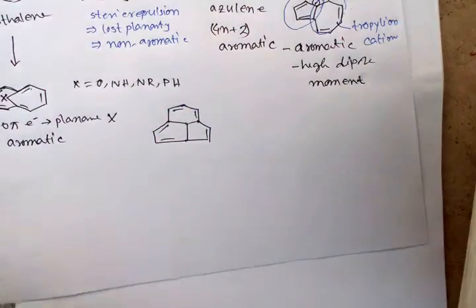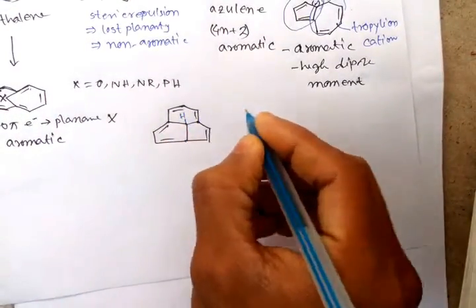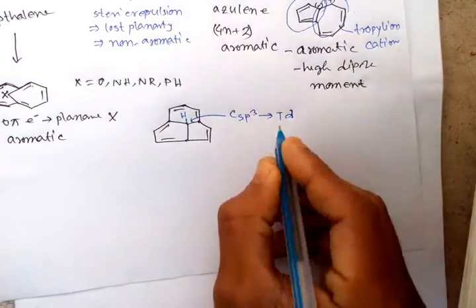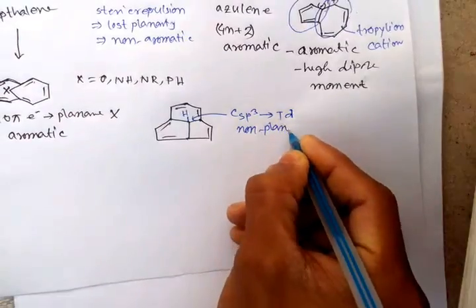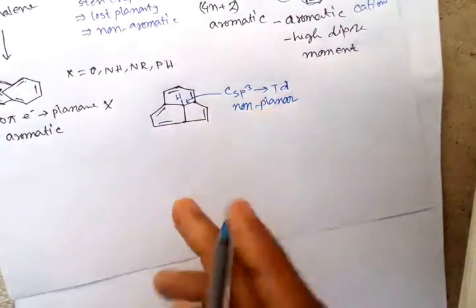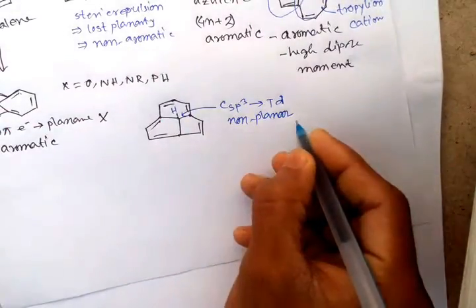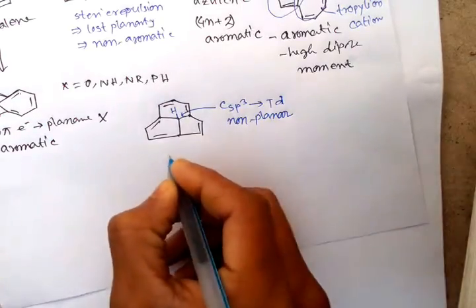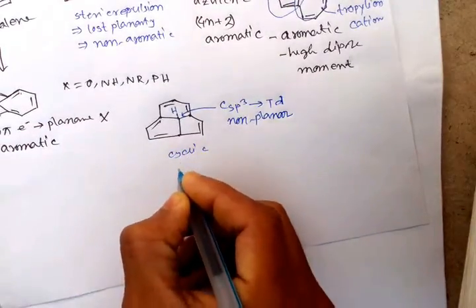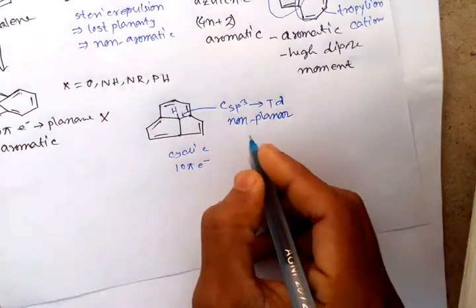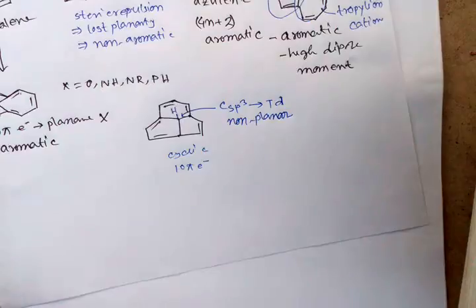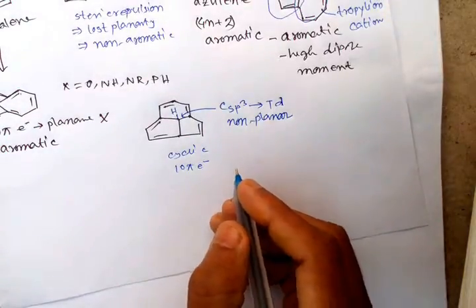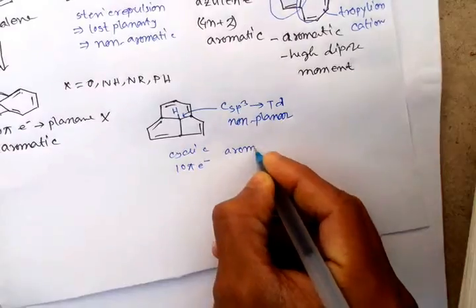Here it is cyclic, and due to the presence of a hydrogen on this carbon it is an sp3 carbon, so it is tetrahedral and non-planar. But the planarity is sufficient for overlapping. This is a cyclic system with a 10 pi electron system, and although it is not permanently planar, it has sufficient planarity for overlapping — in such a case it will be aromatic.